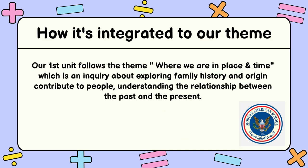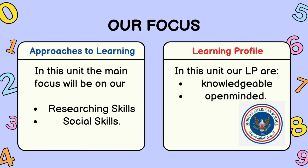Our first unit follows the IB theme 'Where We Are in Place and Time,' which is an inquiry about exploring family history and origin, contributing to people's understanding of the relationship between the past and the present. Our focus will be on employing research skills and social skills throughout this unit, embodying IB learner profile traits such as being knowledgeable and open-minded.